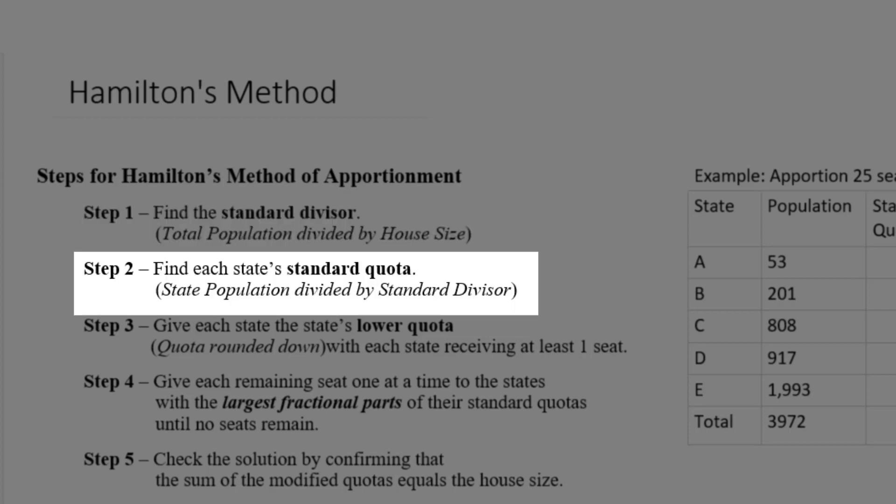Another term you're going to see over and over again is standard quota, which is each state's population divided by the standard divisor we found in step one. We're going to find the standard quota in step two of every single apportionment method.